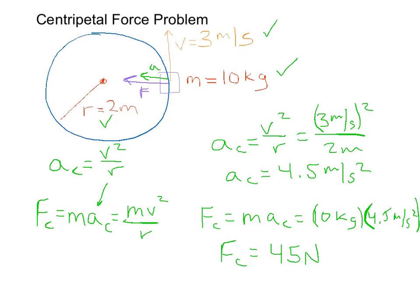And again, the correct statement is that the centripetal acceleration is 4.5 meters per second toward the center. And the centripetal force, again, is 45 newtons toward the center. Okay, that's it, and talk to you next time.